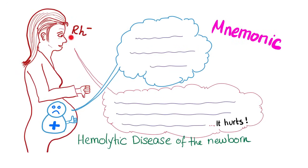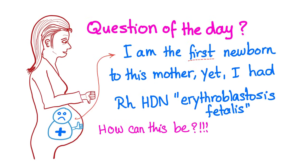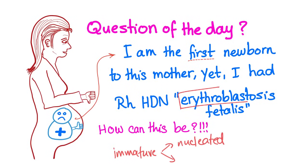The next video has a mnemonic to remember all of these scenarios, so make sure to subscribe. Question of the day: if I am the first newborn to this mother, yet I had RH hemolytic disease of the newborn, how can this be? Let me know in the comments. Why do we call this disease erythroblastosis fetalis? Because the bone marrow is overwhelmed and working like crazy, producing immature red blood cells — such as nucleated red blood cells known as normoblasts, and erythroblasts, which are immature precursors of erythrocytes.